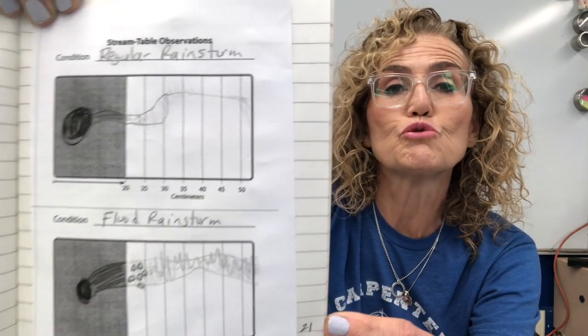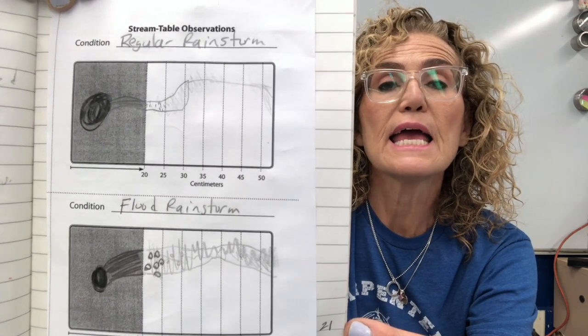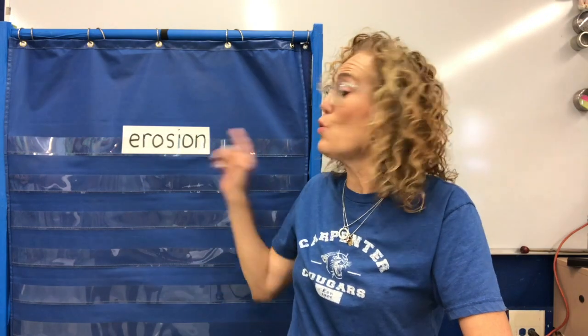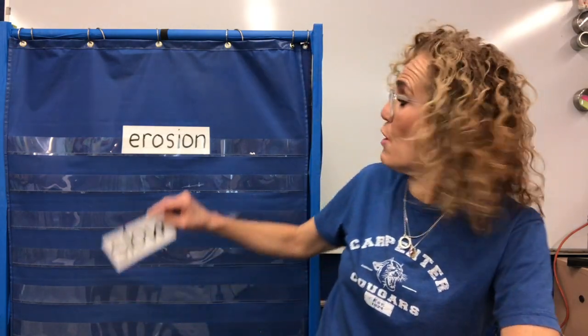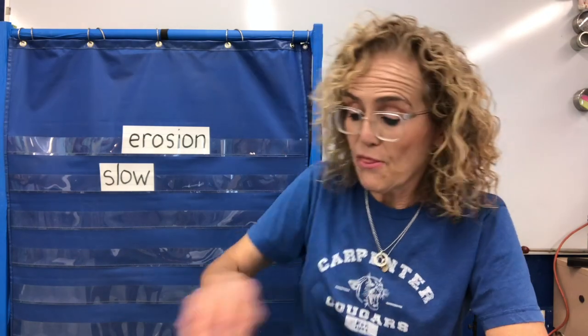Please make sure you draw something like this in your science notebook. Today we talked about erosion and compared a regular rainstorm and a flood. When there's just a regular rainstorm, erosion happens pretty slowly — it takes time. But when there's a flood, when there's a lot more water and a lot more force, erosion can happen very fast. We're going to continue talking about erosion next time — see you later!